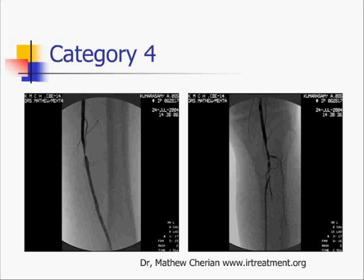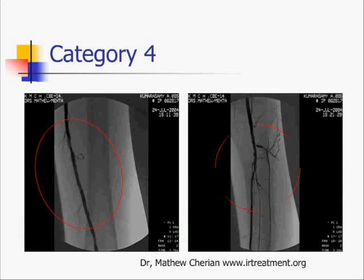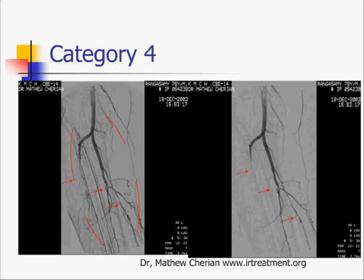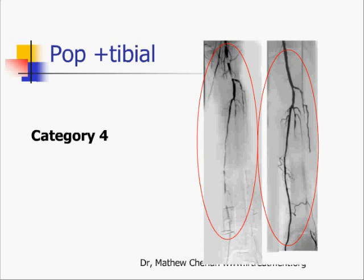A focal lesion in the SFA and an associated lesion in the below-knee vessels, and the result after angioplasty. Another category 4 lesion before and after angioplasty. In the end, we can show you several examples where, though the disease looks bad, you can successfully treat it — and these are limb-salvaging procedures.